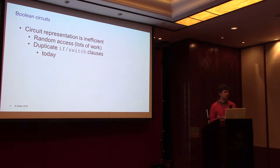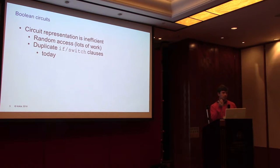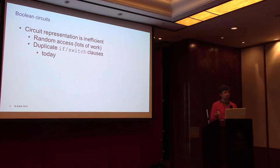One very well recognized issue with representing a function as boolean circuits is random access. There's a lot of work on oblivious RAM that addresses this. The issue is that circuits access a specific data element as programmed. Whenever you want to access an element of an array indexed by some private variable — some private index inside the computation — we cannot go directly and access that data point, because that will reveal information about our internal state.